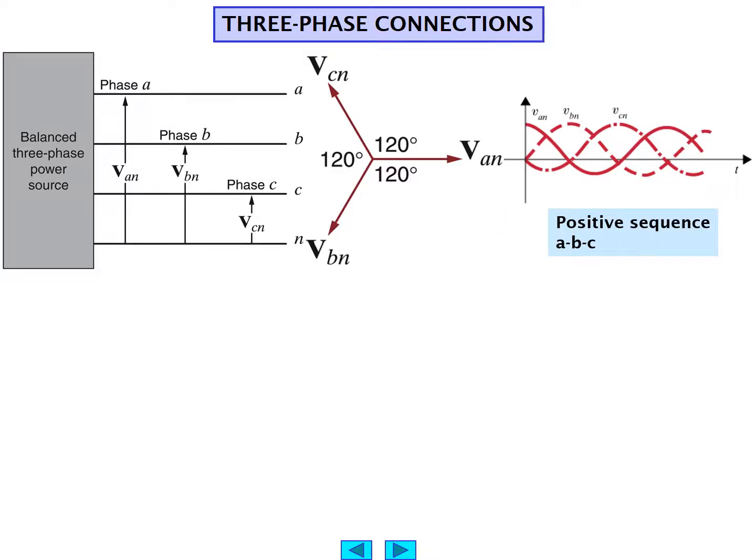We can consider the relative phases of A, B, and C as A being the leading phase, followed by B, followed by C, as shown in this time display of the three different phases.